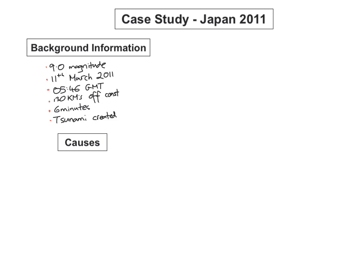What caused this huge earthquake and subsequent tsunami? Japan is located on the east edge of the Eurasian plate. The oceanic plate is subducting under the Eurasian plate, making it a destructive plate boundary where two plates crash against each other. Additionally, Japan lies within the Pacific Ring of Fire.